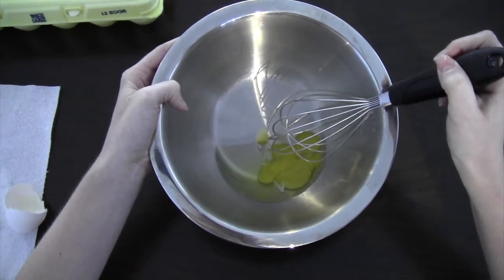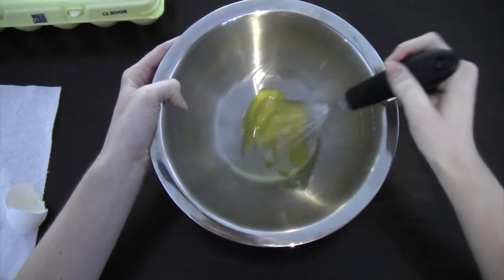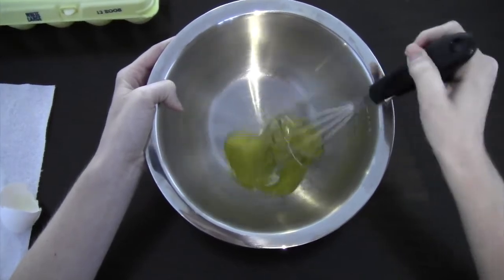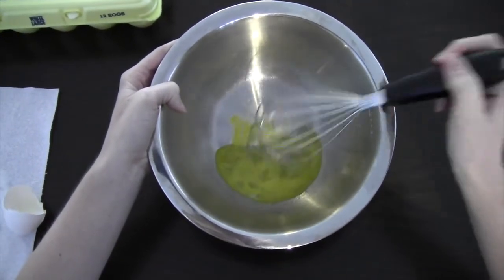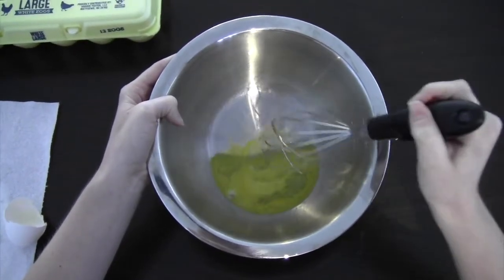And next you're going to do gentle whisking motions quickly in a circle. We're just going to keep doing circular motions until it gets all blended. It should be about the same color.